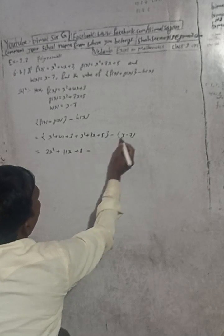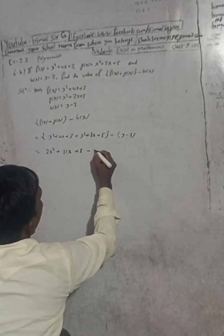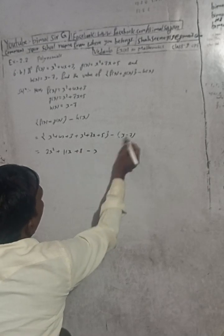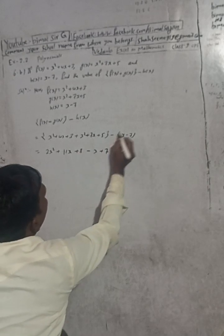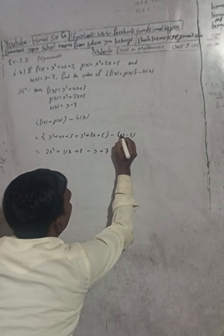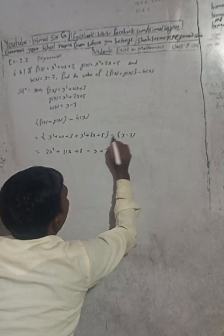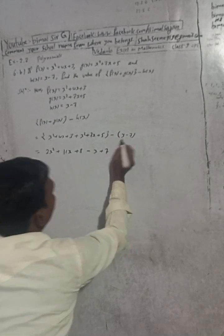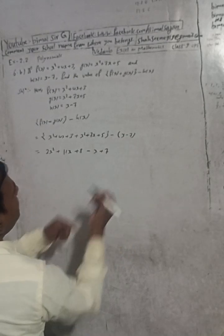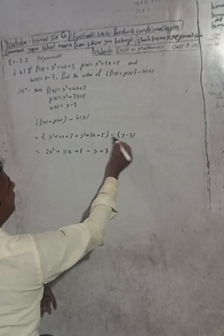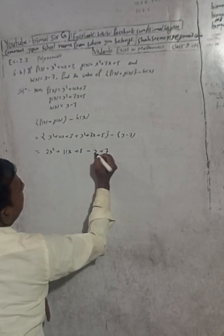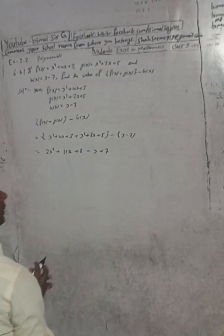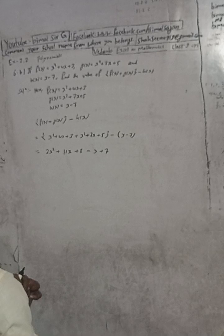Now for the minus h of x in brackets: minus times x is minus x, and minus times minus 7 is plus 7. So the signs change — this is the concept here: minus and plus becomes minus, and minus and minus becomes plus.